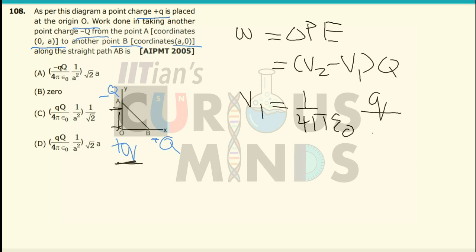Let this distance be, the coordinates are 0, A. This distance will be equal to A, O to A will be equal to A, and O to B will also be equal to A.